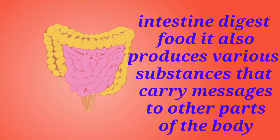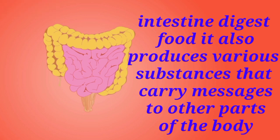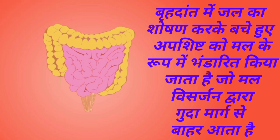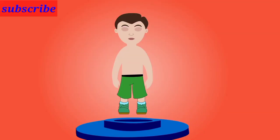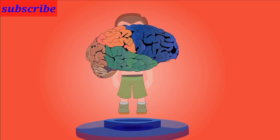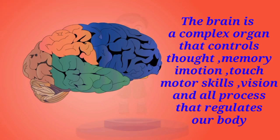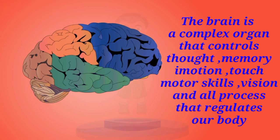Its main purpose is to digest food; it also produces various substances that carry messages to other parts of the body. The brain is a complex organ that controls thought, memory, emotion, touch, motor skills, and vision.